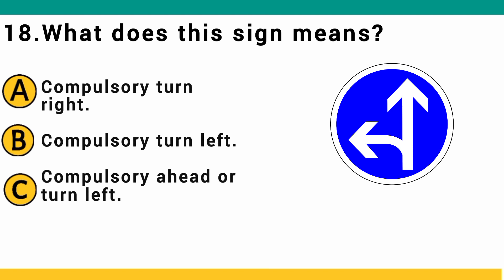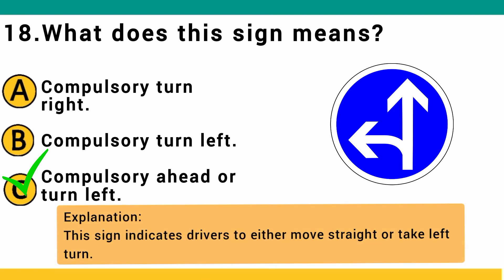What does this sign mean? A) compulsory turn right, B) compulsory turn left, or C) compulsory ahead or turn left. The correct answer is C: compulsory ahead or turn left. This sign indicates drivers must either move straight or take a left turn.